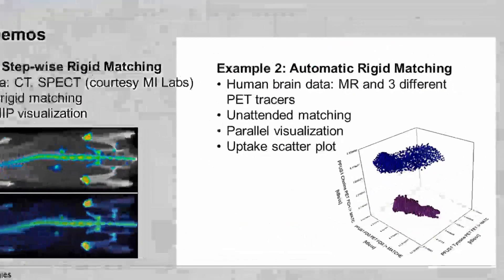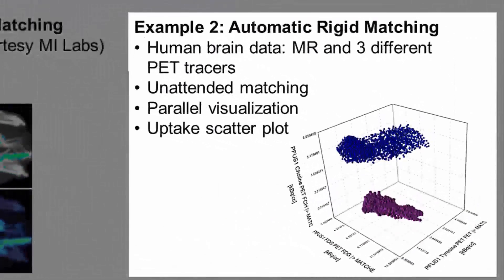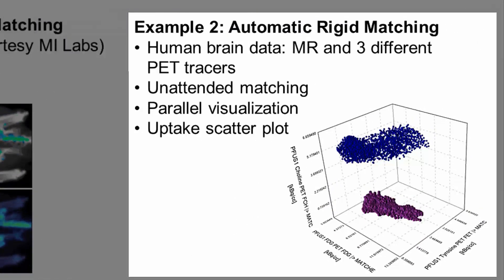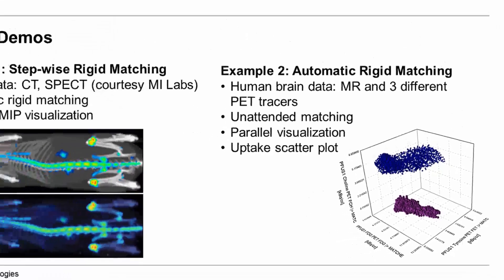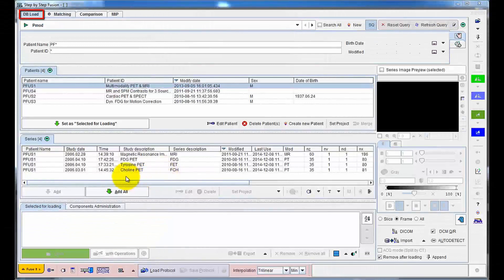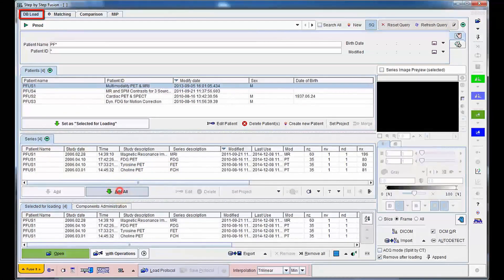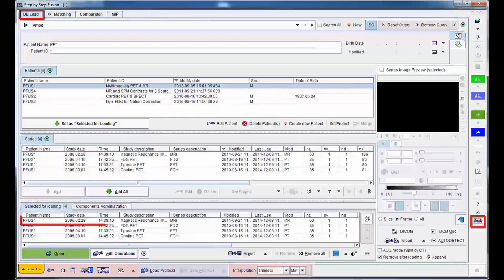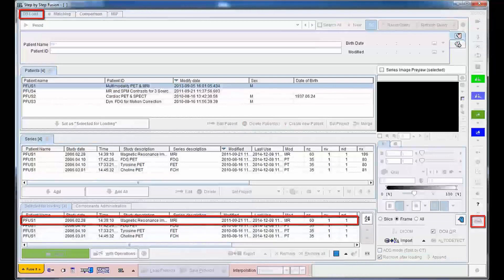In the second example, images acquired with three different PET tracers are registered to an anatomical MRI. In this brain tumor case, an unattended rigid matching workflow can be successfully applied. The four image series are selected in the database browser and the default processing pipeline is activated. As PMOD's default is to use the anatomical series as the reference and apply rigid cross-modality matching, no further interaction is needed.